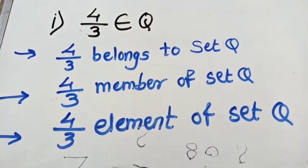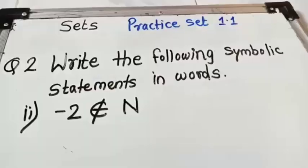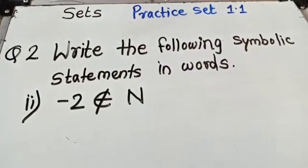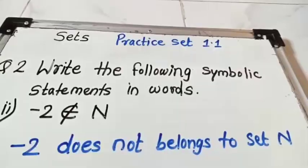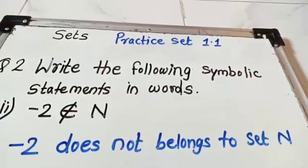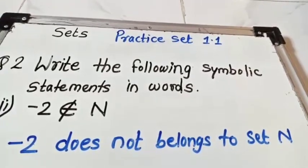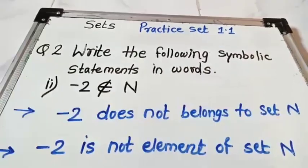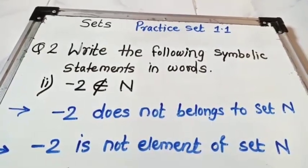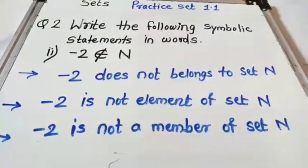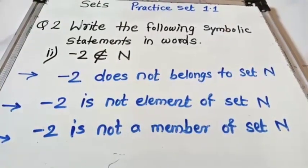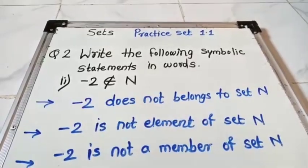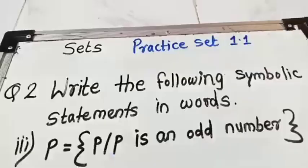Next example: -2 does not belong to N. In word form: '-2 does not belong to set N.' Another answer: '-2 is not an element of set N' or '-2 is not a member of set N.' You have to write only one answer.